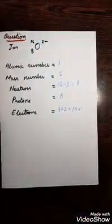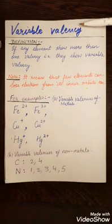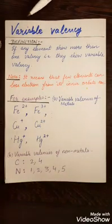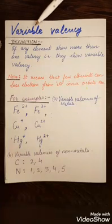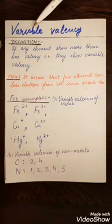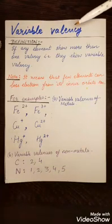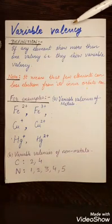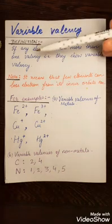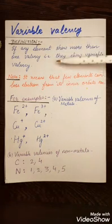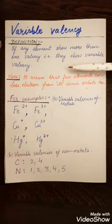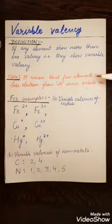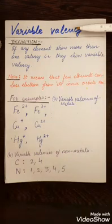Now let us understand variable valency. Variable means something which is not fixed and keeps changing. So a few elements have a valency that keeps changing in chemical reactions. If an element shows more than one valency, it means they are showing variable valency.